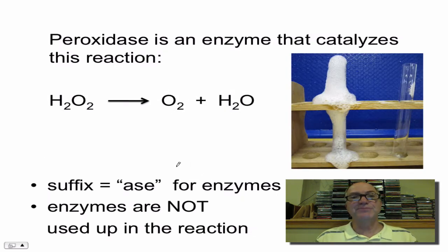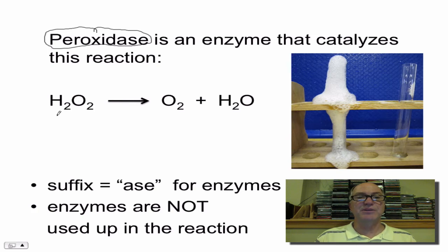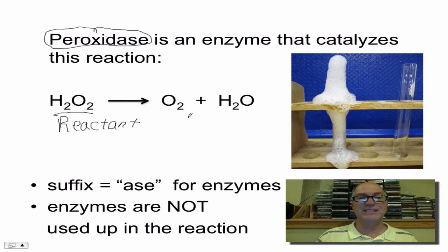Let's go back to the lab that we did. We used an enzyme called peroxidase, which was found in the liver. In fact, peroxidase is found in all of your cells. It's a very important enzyme that catalyzes the following reaction: hydrogen peroxide is the reactant. Anything written on the left side of a chemical equation is called the reactant. Hydrogen peroxide is split apart — this is called a decomposition reaction — because hydrogen peroxide is decomposed to form two products: oxygen and water.